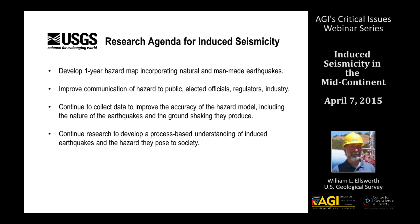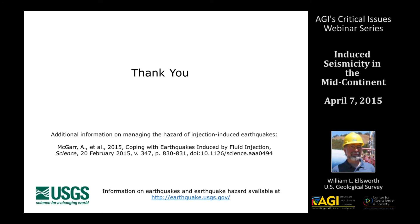Moving forward, the USGS goal in the short term is to develop a one-year hazard map incorporating both natural and man-made earthquakes. We're also working on communicating the hazard to the public, elected officials, regulators, and industry. We'll continue collecting data to improve accuracy of hazard models — including the nature of earthquakes and the ground shaking they produce — and continuing research to develop a process-based understanding of induced earthquakes, which will give us a much better heads-up on how to proceed and help those who need to regulate this activity responsibly going forward.